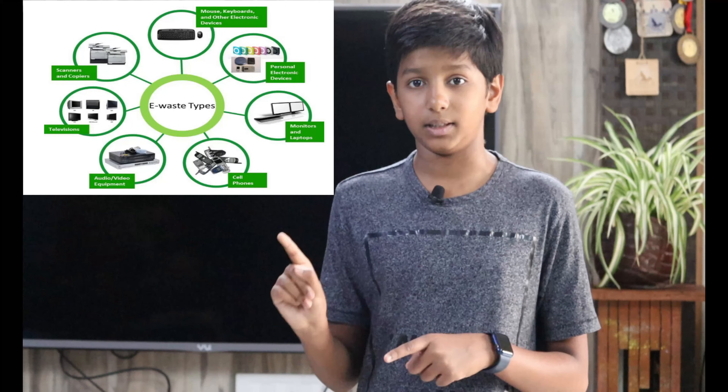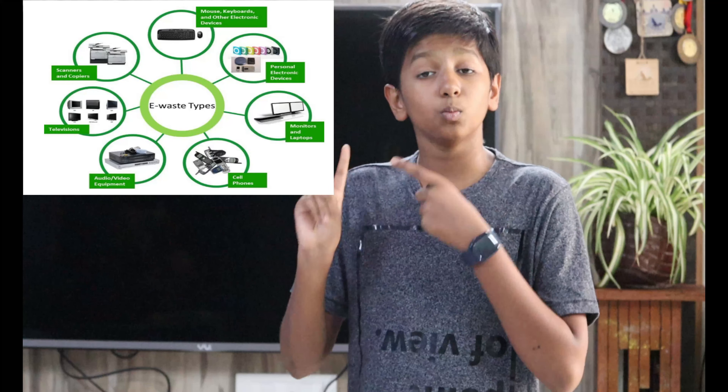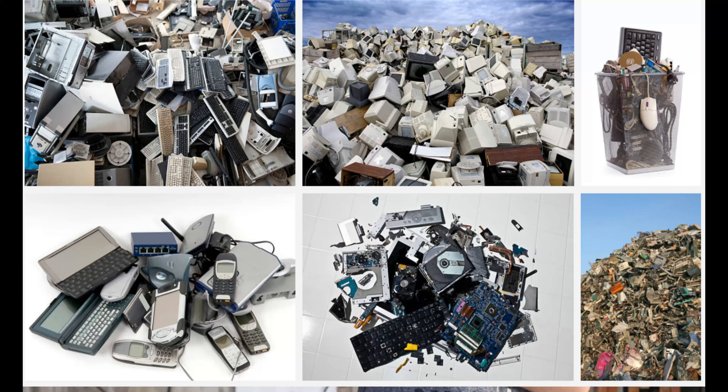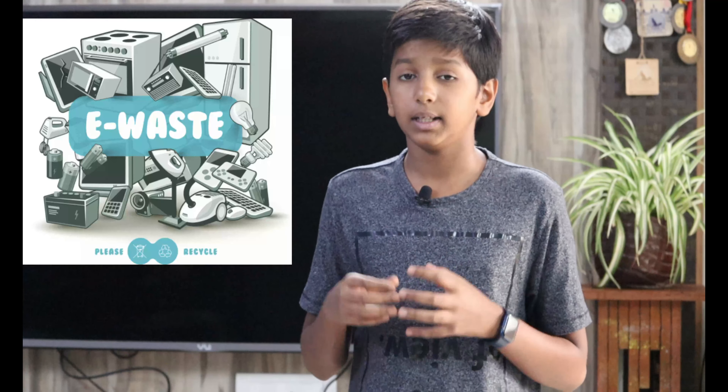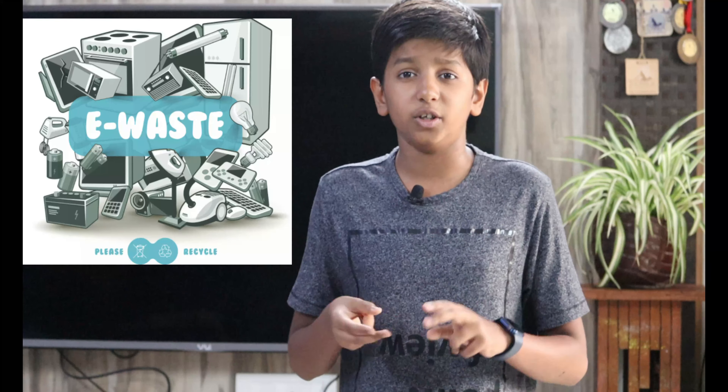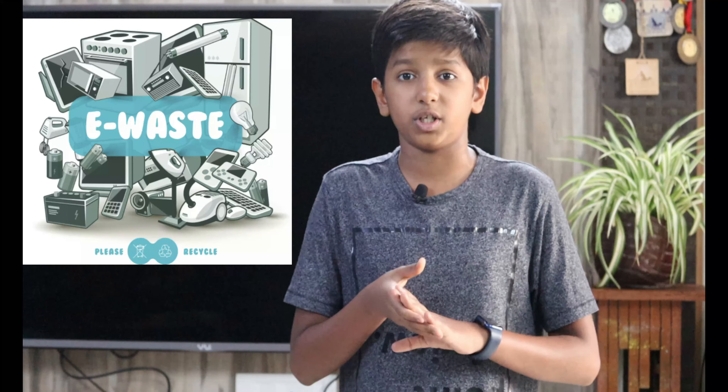Now, types of e-waste. There are totally three types. First, large household appliances e-waste, which consists of refrigerators, freezers, dishwashers, washing machines, etc. Second, small household appliances e-waste, which consists of hair dryers, toasters, irons, etc. Third, information technology and telecommunication equipment, which consists of computers, telephones, mobile phones, printers, etc.